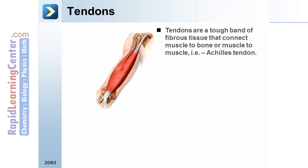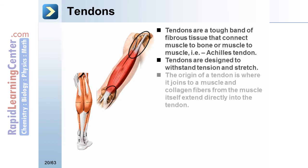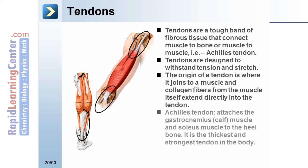Tendons are a tough band of fibrous tissue that connect muscle to bone or muscle to muscle, for instance the Achilles tendon. Tendons are designed to withstand tension and stretch. The origin of a tendon is where it joins to a muscle, and collagen fibers from the muscle itself extend directly into the tendon. The Achilles tendon attaches the gastrocnemius (calf muscle) and soleus muscle to the heel bone; it is the thickest and strongest tendon in the body.